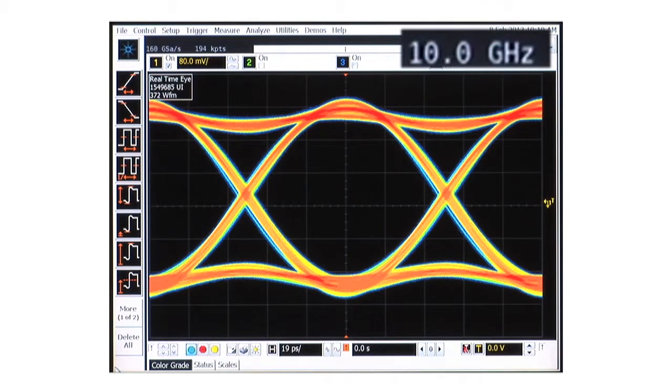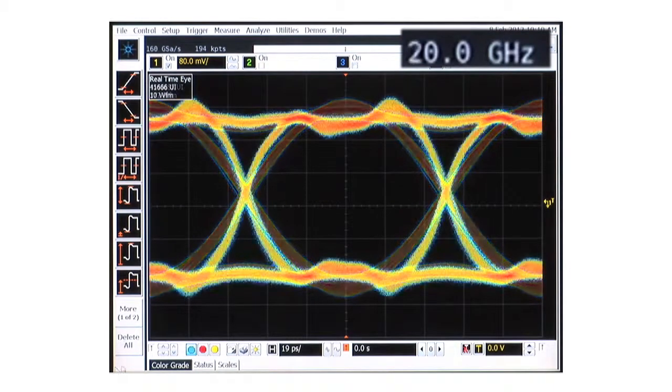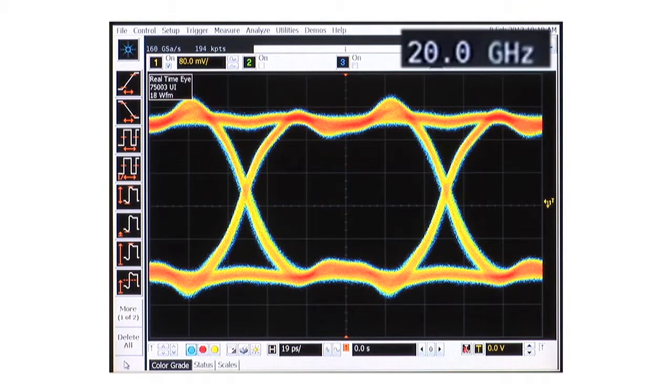At 10 GHz, there's only enough bandwidth to look at the first harmonic of this signal. Now, we measure the same signal at 20 GHz. Notice how the eye shape begins to appear more like a square wave.